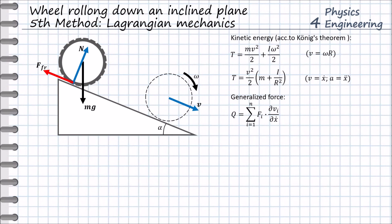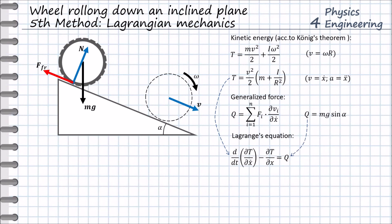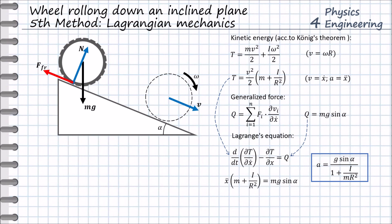The reaction force N also does no work on the wheel since it is perpendicular to the linear velocity, so it is also excluded from the generalized force. Therefore, only the projection of the gravity force, mg·sin(alpha), contributes to the generalized force. We write Lagrange's equation and substitute the kinetic energy and generalized force to obtain the linear acceleration of the rolling wheel. Although this is not the easiest way to solve this particular problem, Lagrangian mechanics is the most general method for solving complex mechanical systems with many objects and several degrees of freedom, and is the recommended approach in such cases.